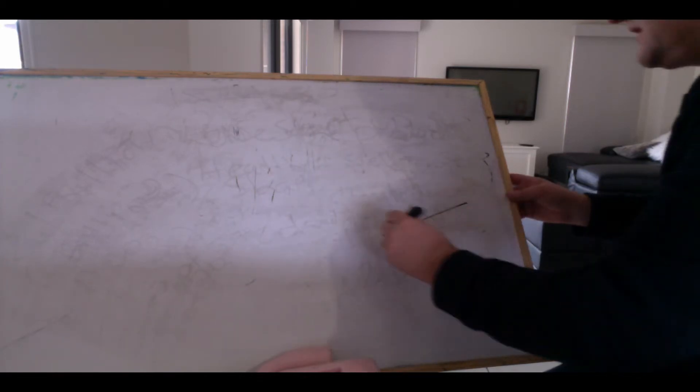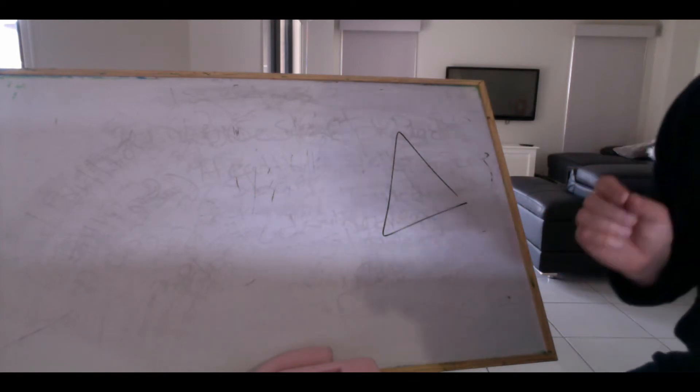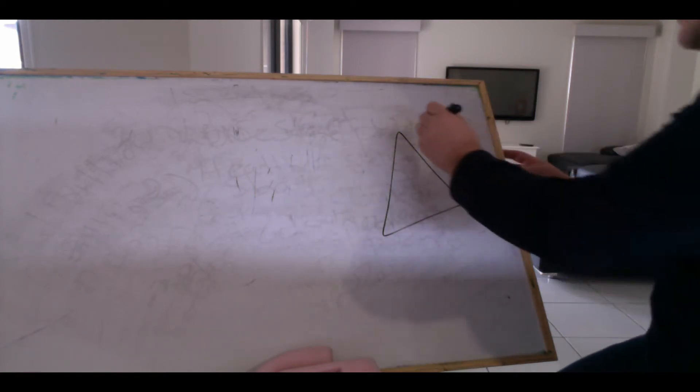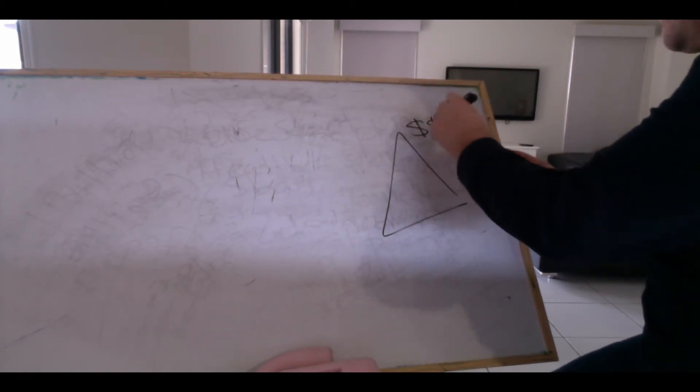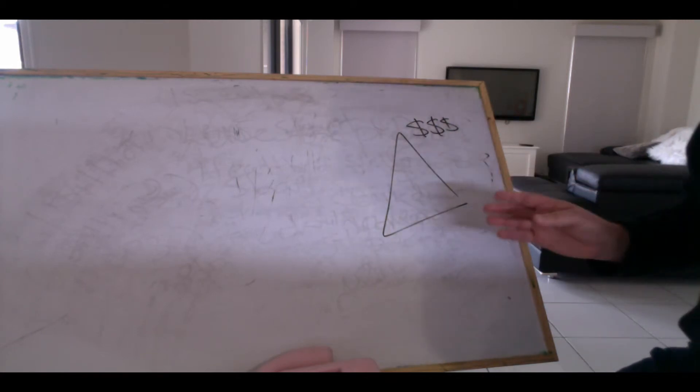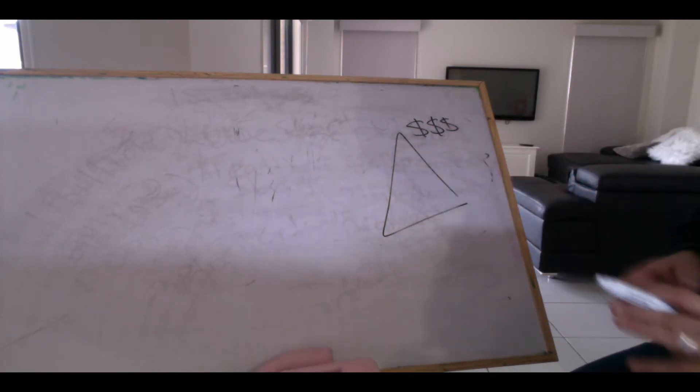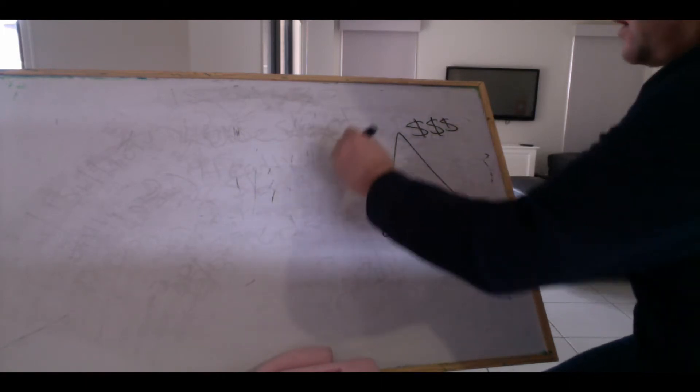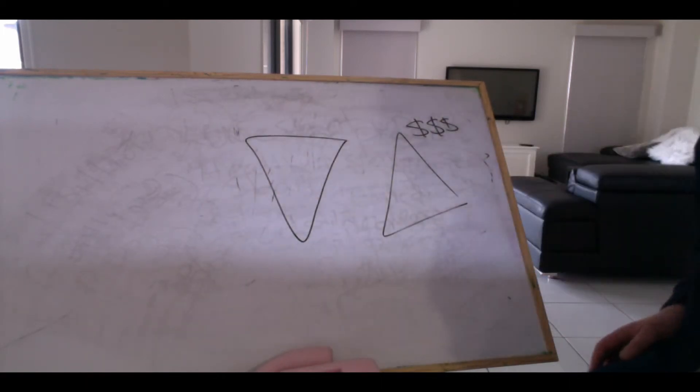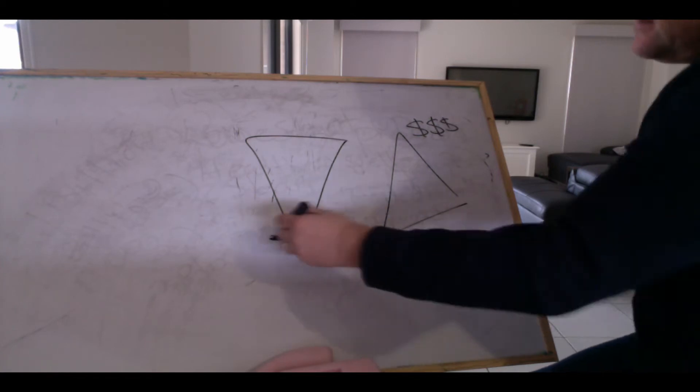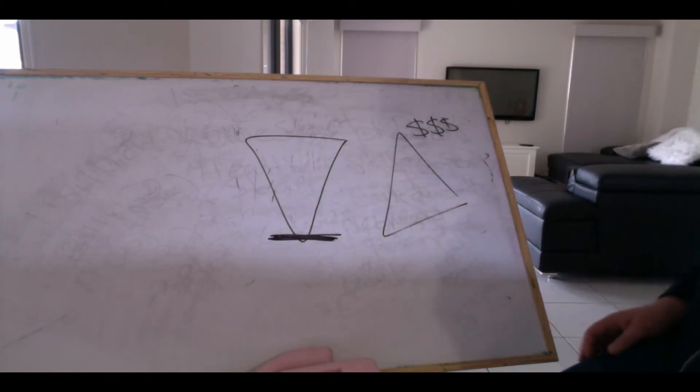And, you know, they say, oh, yeah, it's a pyramid. But a pyramid is where the people at the top make all the money. And also with a pyramid, in most cases, there's no products. They make money from a registration fee. And it's a scam, and you stay away from it. With network marketing, it's more like an upside-down pyramid. Everybody starts here, and it's everybody's choice what they'd like to do.